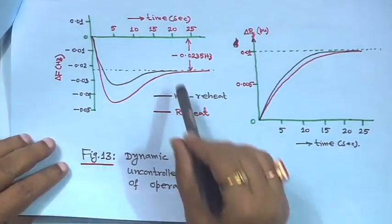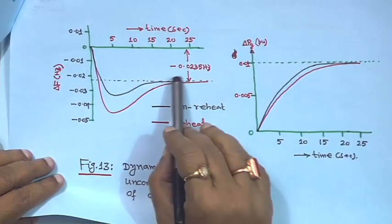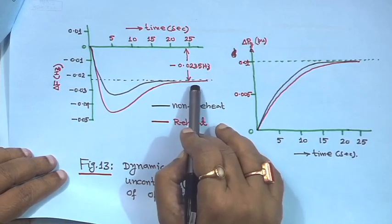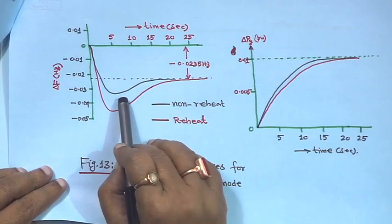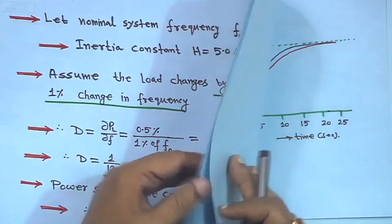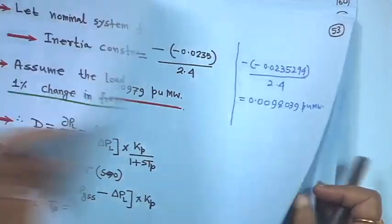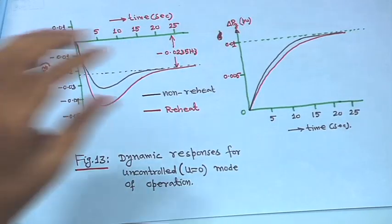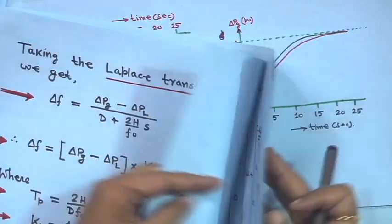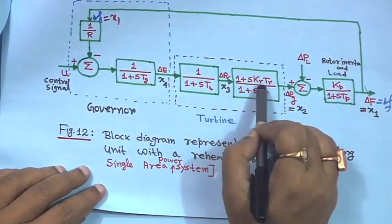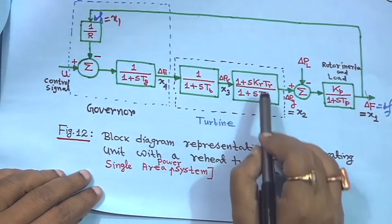Coming back to this diagram, this is the steady-state error of minus 0.0235 Hz. If you do the simulation for a non-reheat turbine, from the block diagram you drop one term — only one time constant will be there. For a non-reheat turbine this term should be dropped; in that case k_r is equal to 1.